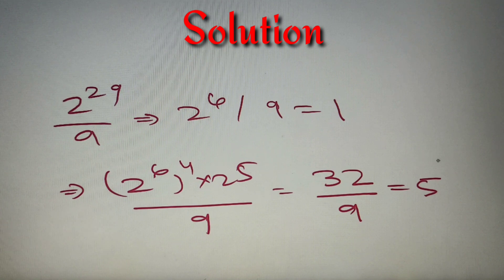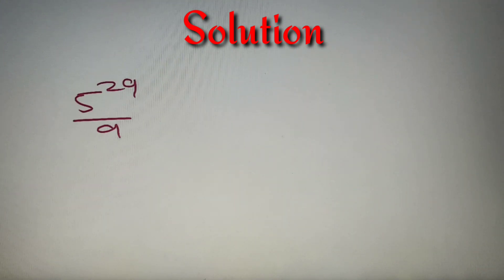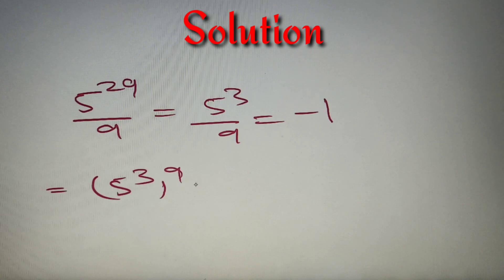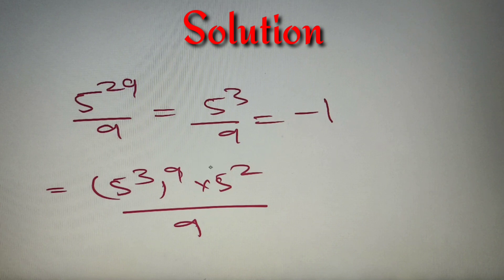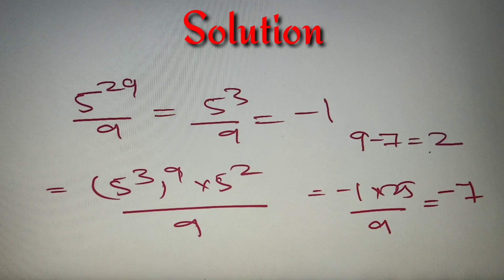Now we only have to find the remainder of 5 raised to power 29 when divided by 9. When 5^3 is divided by 9, the remainder is minus 1, because 5^3 equals 125 and 125 divided by 9 gives remainder minus 1. Now 5^29 can be represented as (5^3)^9 multiplied by 5^2. Since 5^3 gives remainder minus 1, then (5^3)^9 gives remainder minus 1 as well, because minus 1 raised to any odd number is minus 1 itself. The net remainder is minus 1 multiplied by 25 divided by 9, which gives remainder minus 7. Since remainders must be positive, our final answer is 9 minus 7, which equals 2.